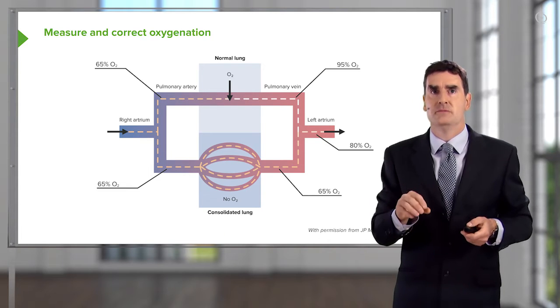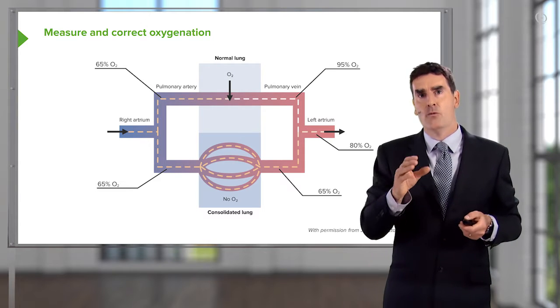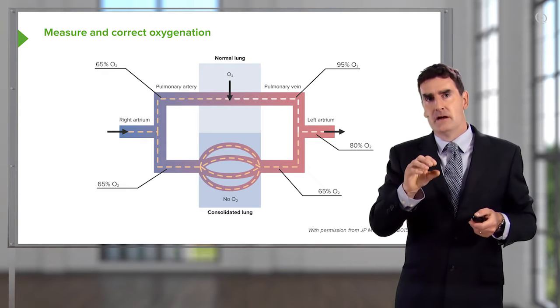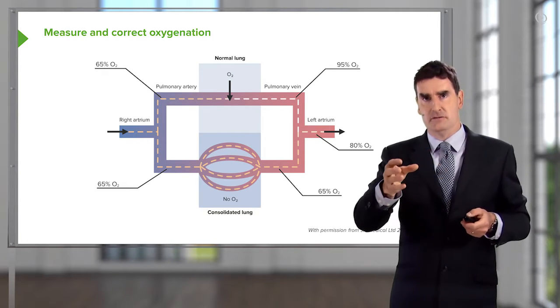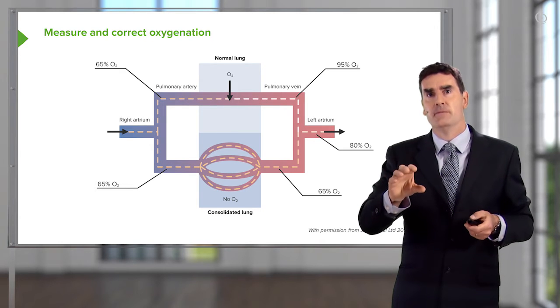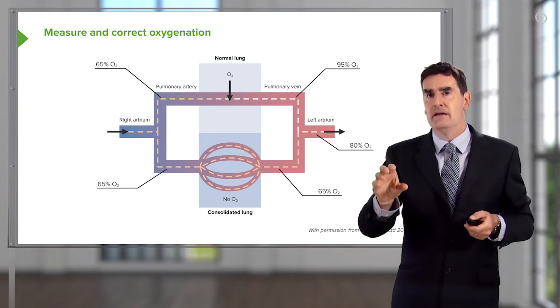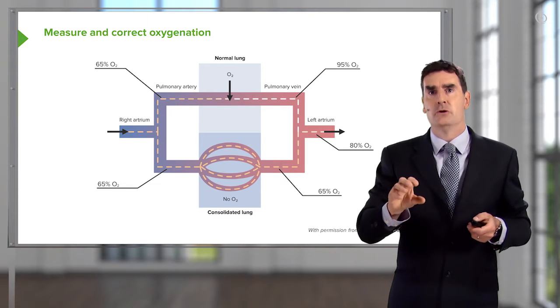And that causes hypoxia because it generates what we call a right-to-left shunt. What I mean by that is that blood coming up the pulmonary artery, which is deoxygenated, will reach the area with the consolidation in it, will go through that area, but because there's no air in the alveoli, that blood will not be oxygenated.